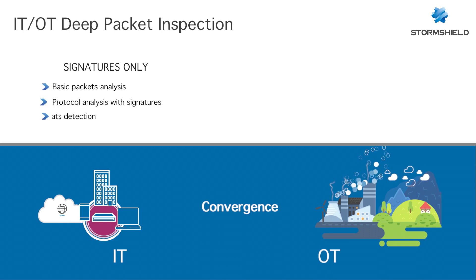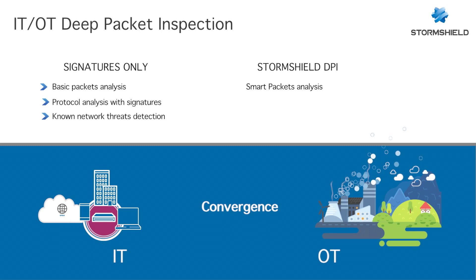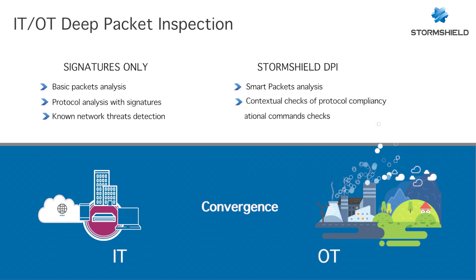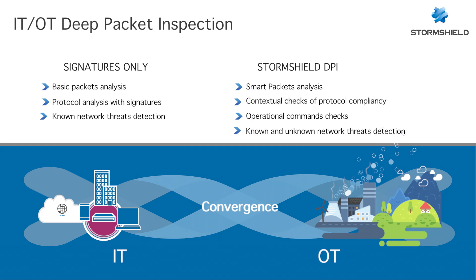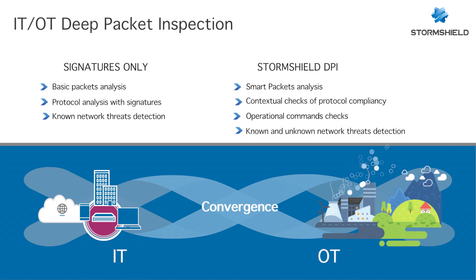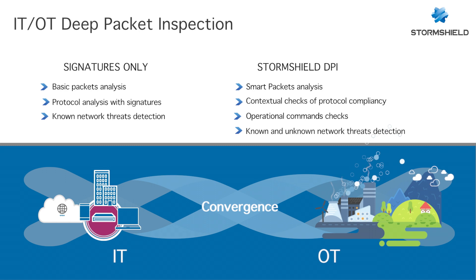Signature-based DPI relies on pattern matching, and this approach usually fails to deal with new, sophisticated, and targeted attacks. The DPI that StormShield offers has multi-dimensional protections for both networks. The OT and IT protections are built within the DNA of StormShield DPI. OT protocols such as Modbus sit within a TCP segment and are subjected to all types of TCP/IP attacks.